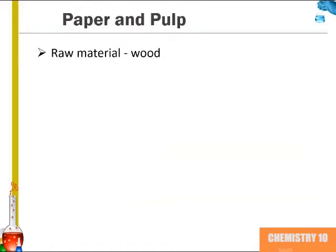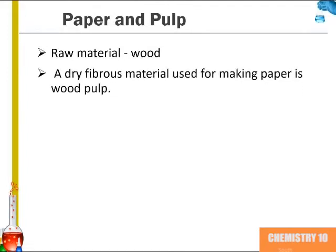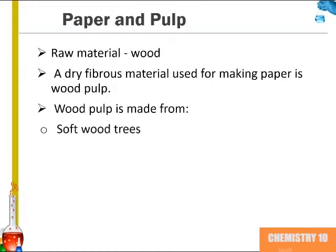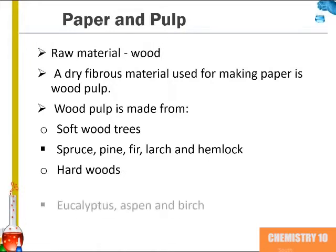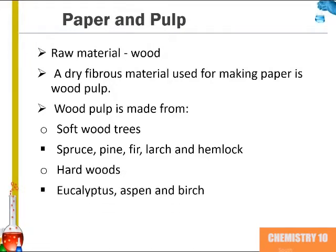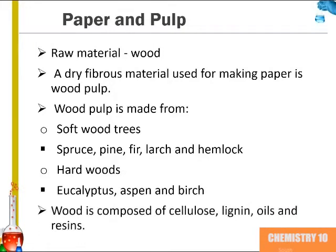We now move on to paper and pulp manufacturing. In this process, the raw material of wood is used to make paper pulp, which is a dry fibrous material. Wood pulp is made from softwood trees such as spruce, pine, fir, larch, and hemlock, or hardwoods such as eucalyptus, aspen, and birch.